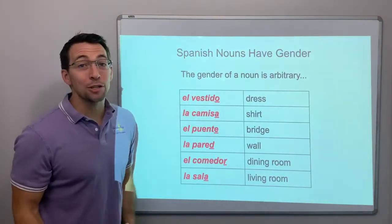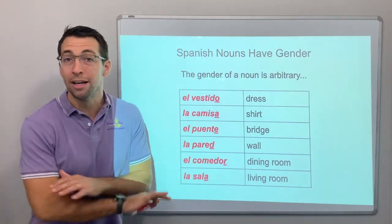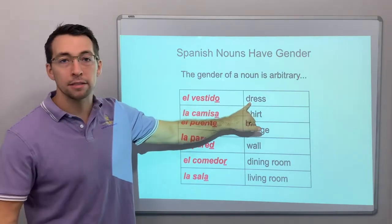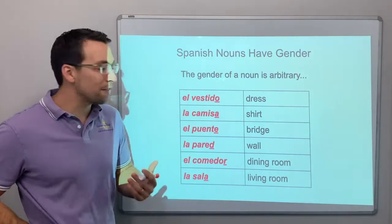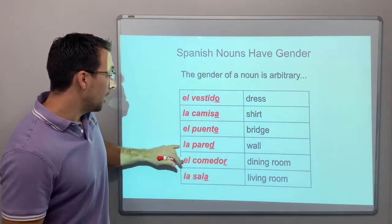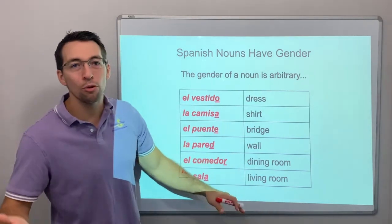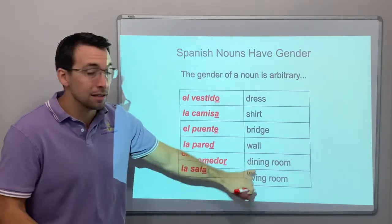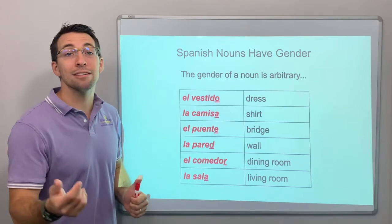The gender of a noun is arbitrary — it's not about being a man or woman, there's no inequality, it's just structure. For example, 'el vestido,' a woman's dress, is masculine. 'La camisa' is feminine. 'El puente,' a bridge, is masculine. 'La pared,' a wall, is feminine. In a house, the dining room is masculine and the living room is feminine — every noun in Spanish has a gender.